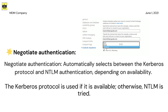Machines inside the local area network or connected through VPN can use Kerberos authentication for Outlook Anywhere or MAPI over HTTP if they can contact the domain controller. We have three authentication methods: Basic, NTLM, and Kerberos. In the configuration, there is also an option called Negotiate — it attempts Kerberos first, and if that fails, it falls back to NTLM.